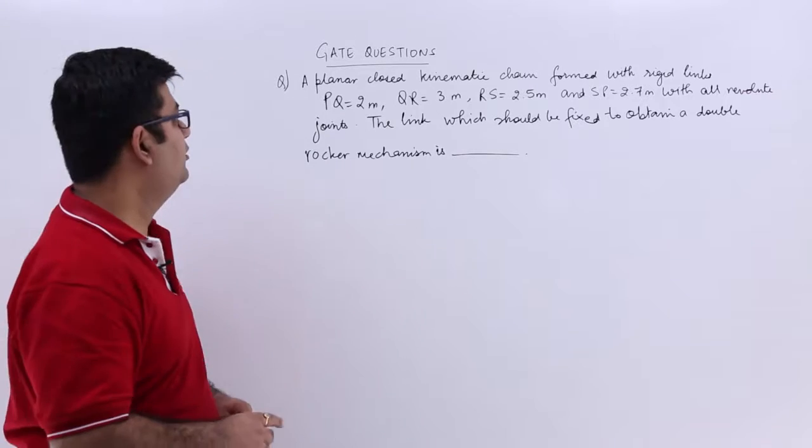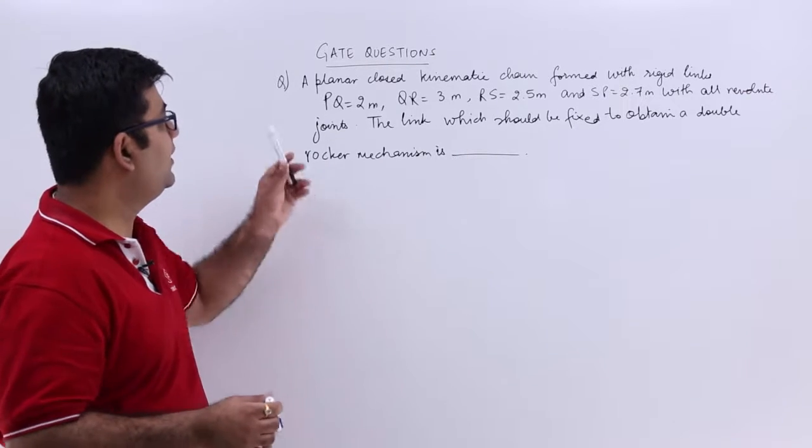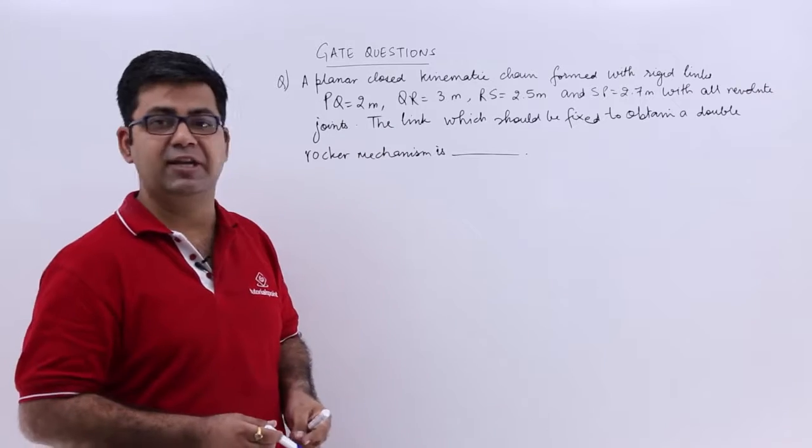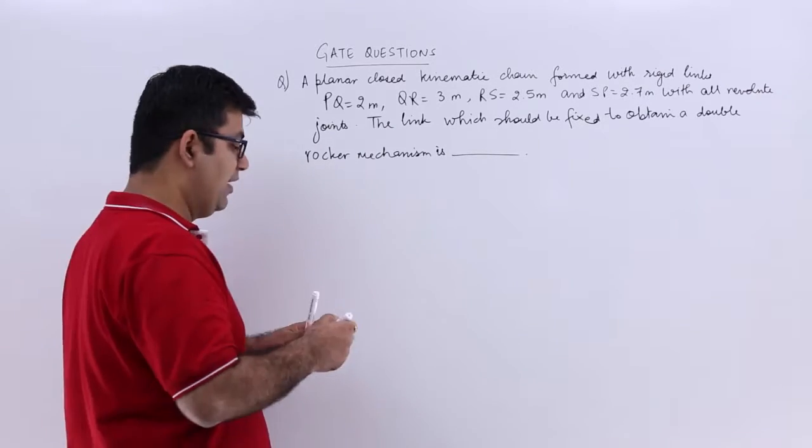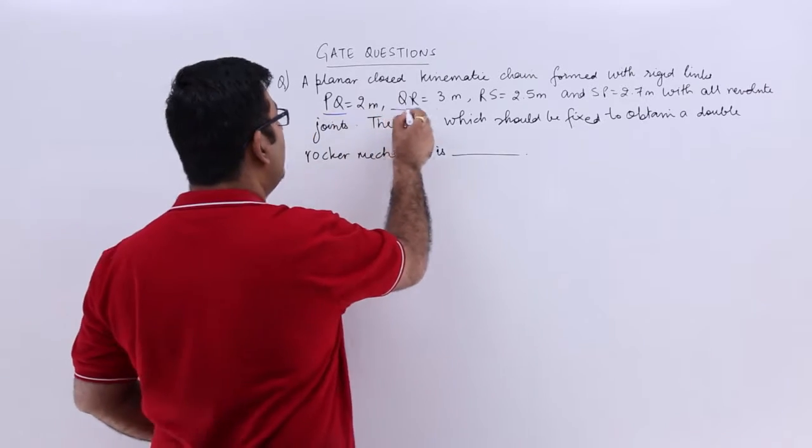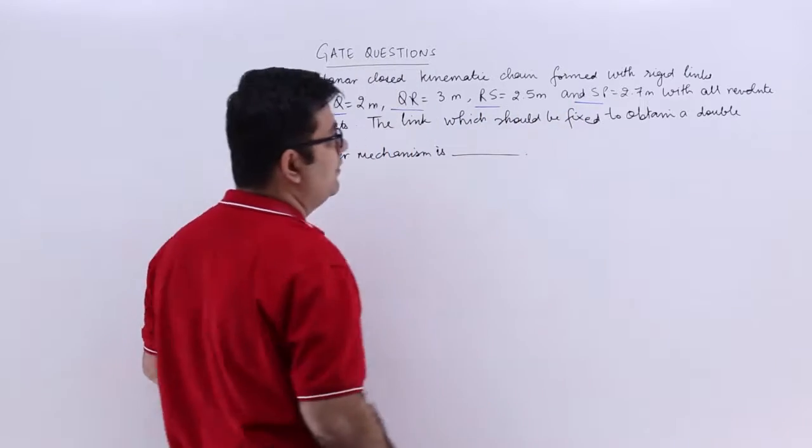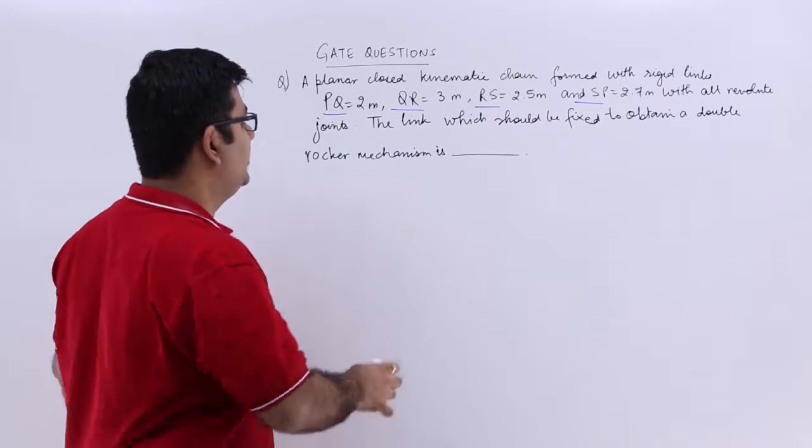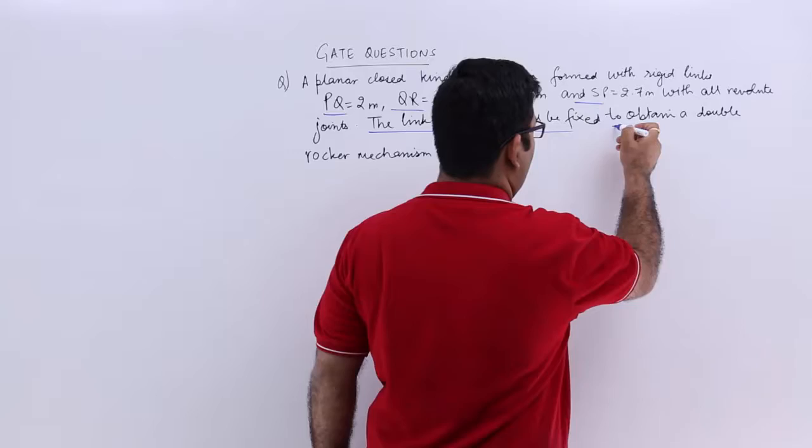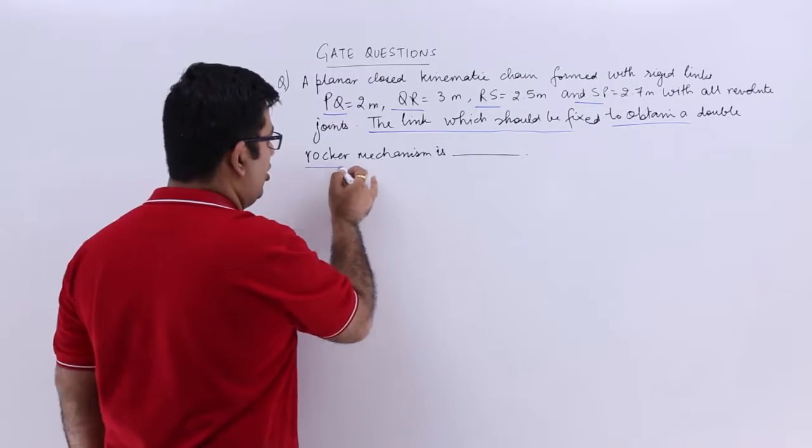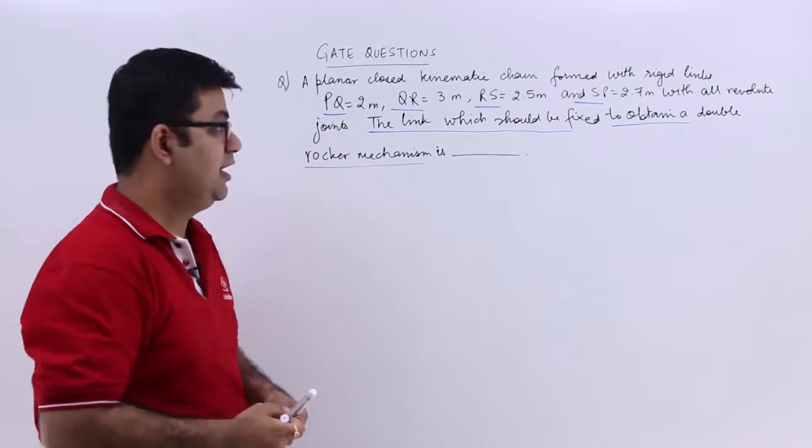Now let's look at question number 3. It says a planar closed kinematic chain is formed with rigid links PQ, QR, RS and SP, with all revolute joints. The link which should be fixed to obtain a double rocker mechanism is...